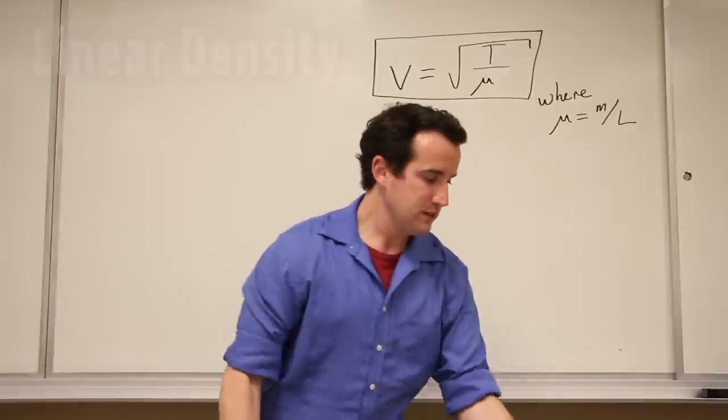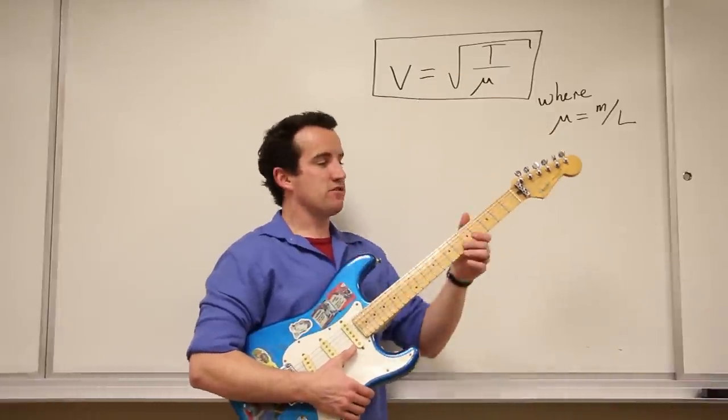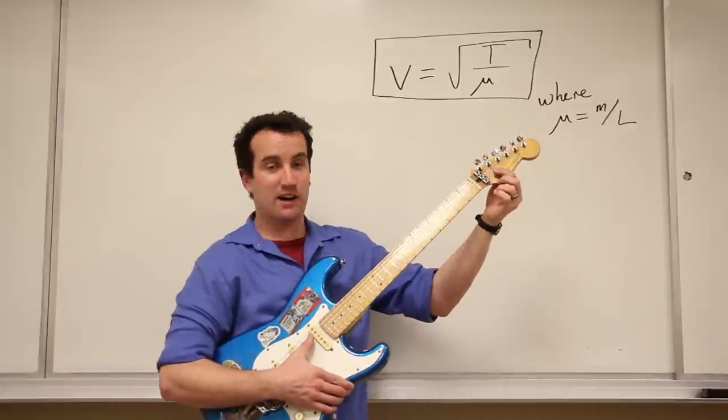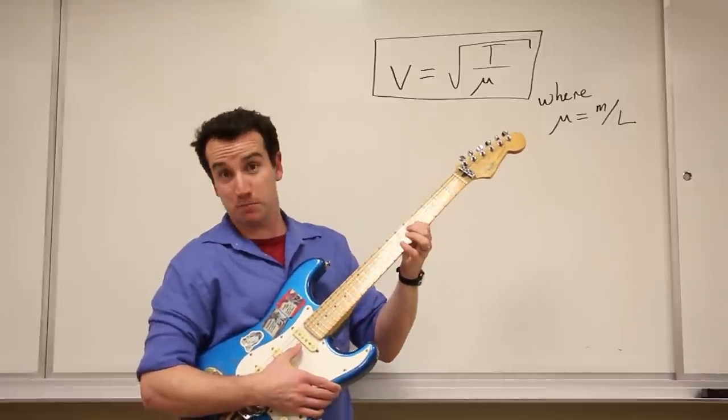For example, the length of the string that vibrates is L, and the mass of the string that vibrates is M. We have to ignore the excess string at the top, including cases where we put our finger down and pluck just the bottom part of the string.